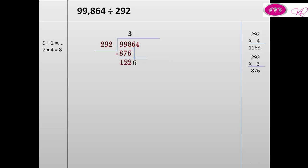We bring down 6, making 1,226. 1,226 divided by 292 — we look at 12 and 2: 12 divided by 2 equals 6. We try 6: 6 by 292 equals 1,752. That is more than 1,226, so we cannot take 6.